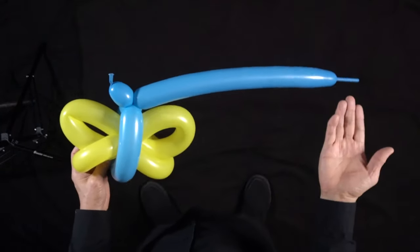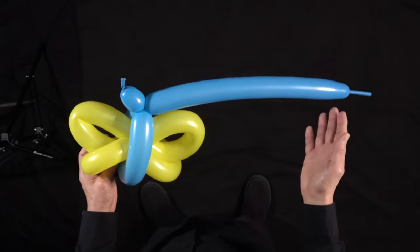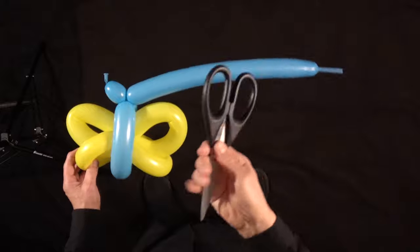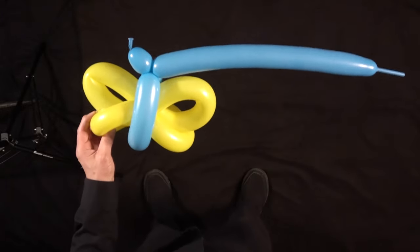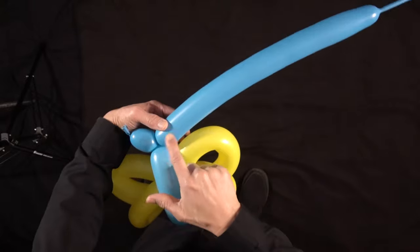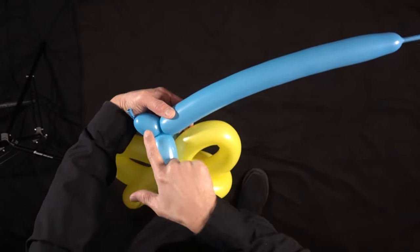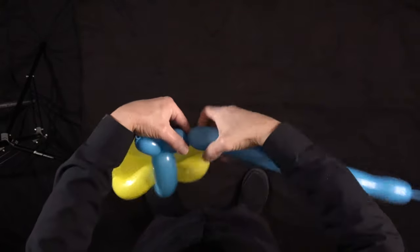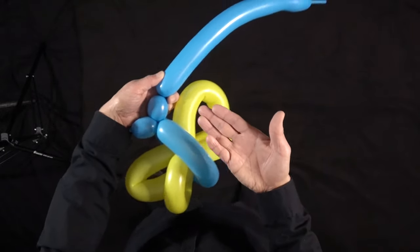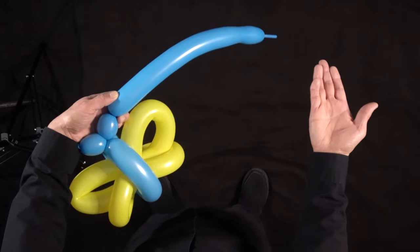Now of course we have extra balloon here, so let me show you how to take care of that. What you're going to need are some scissors. So first of all, you're going to try and make a basic twist to match this one here. Got your matching basic twist here. Now we're going to have to cut off the rest of the balloon.